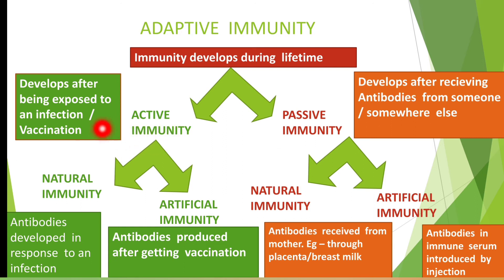Now, active and passive immunity can again be classified into natural or artificial immunity, meaning they are acquired via natural or artificial means. In natural active immunity, the antibodies are produced in our body naturally in response to an infection. This is a natural process which involves our own body producing antibodies in response to an infection.